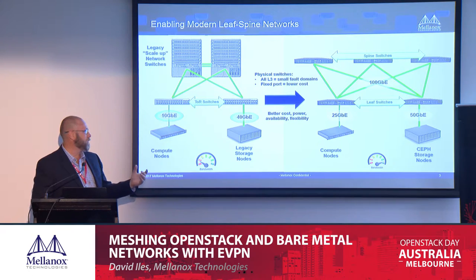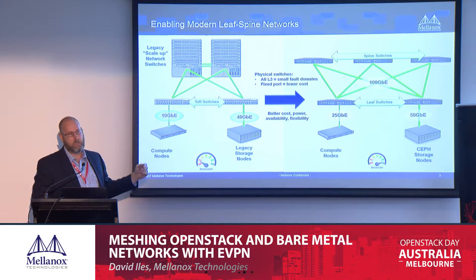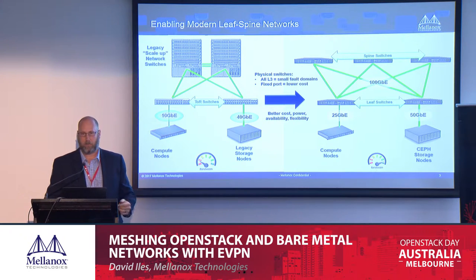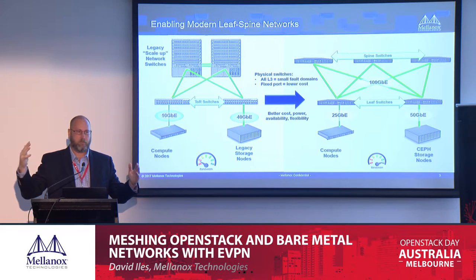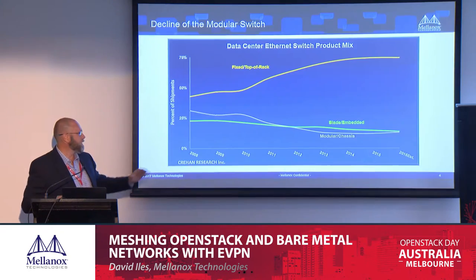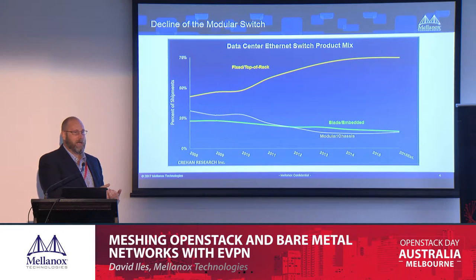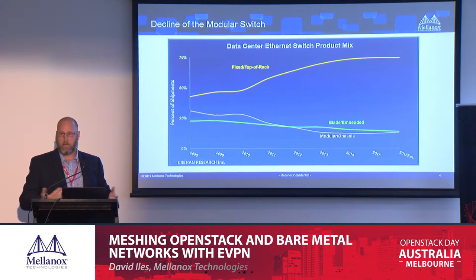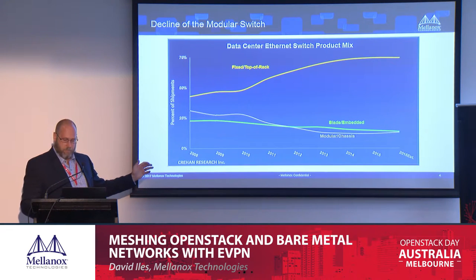That's how most of the industry is moving. Part of it is the move to Layer 3 and small fault domains. With leaf and spine, if you take down one switch you've lost a third or a quarter — maybe one-eighth — of the network instead of half. And if you need to grow, instead of going from a 256-port chassis to a 512-port chassis, you go from three spine switches to four spine switches. It scales very linearly. For the last 10 years, people have been buying a lot less modular switches — everyone's buying fixed-port switches and using them in places they never used them before. This fits with the model of software-defined networking, with a lot of cost advantages.